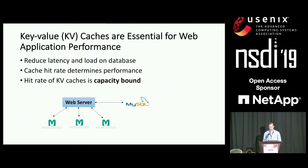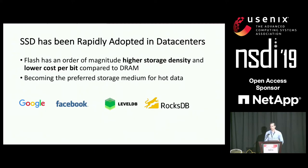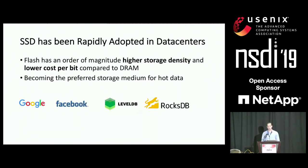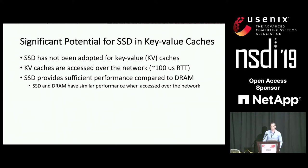Hit rates are usually capacity-bounded, and they determine performance — the performance of these caches is determined by how many objects they can serve. SSDs are widely used in data centers today and are very attractive because they are an order of magnitude cheaper compared with DRAM. Companies like Facebook and Google use SSDs for databases like LevelDB and RocksDB optimized for Flash. But surprisingly, Flash is almost never used for key-value caches, even though they are capacity-bounded and SSD is much cheaper.